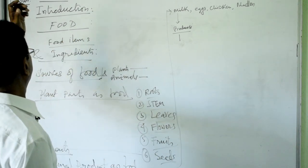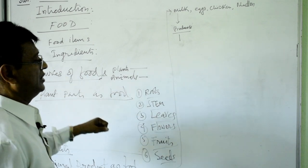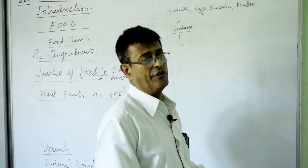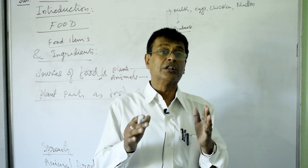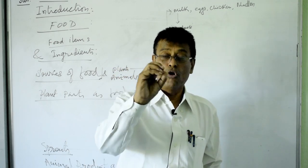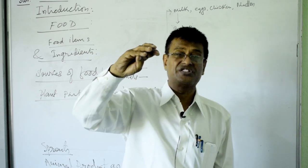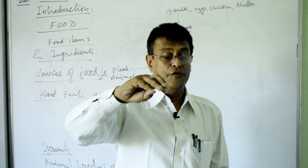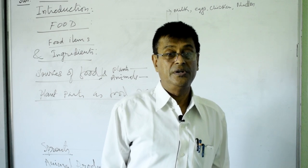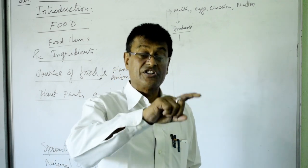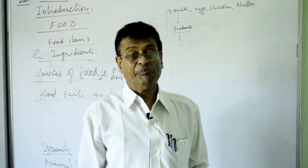The sources of food are plants and animals. Most sources come from plants — rice, cereals, pulses. Not only food, but medicine also comes from plants. We get the ingredients for making clothes from plants as well.